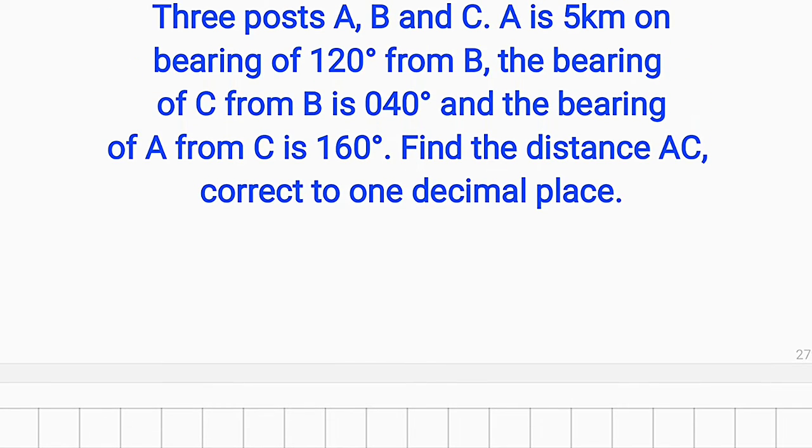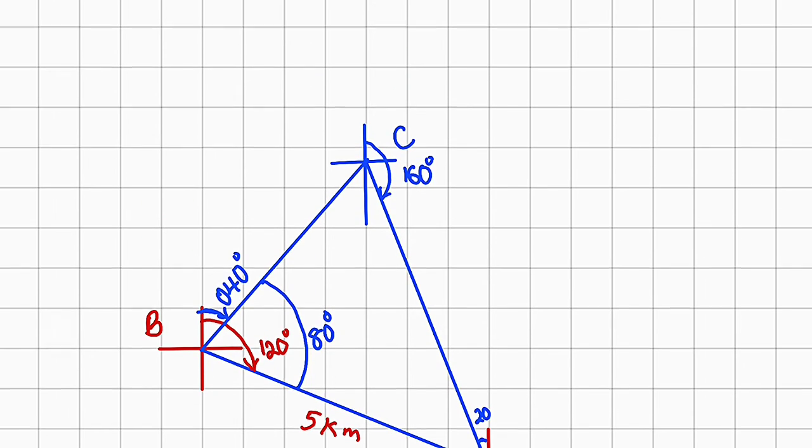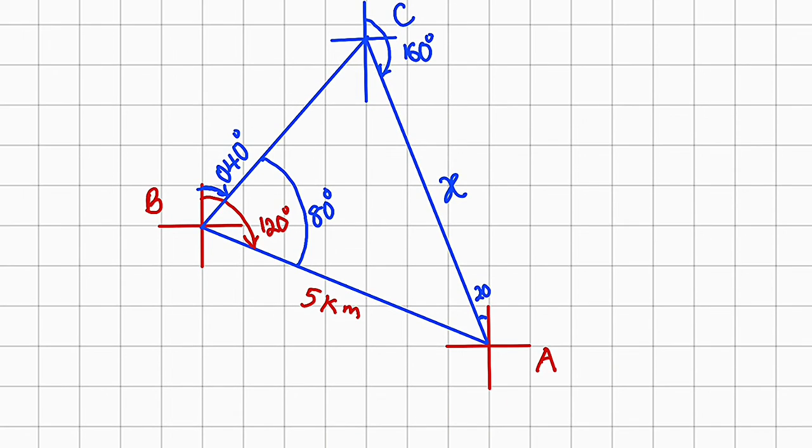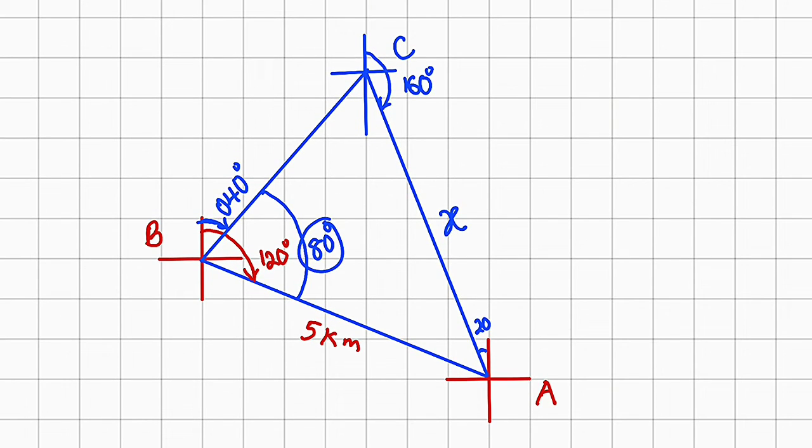We are almost done. Remember, we are asked to find the distance from A down to C, correct to one decimal place. So let us locate it: A to C, this is the point. So let me call it X. Let's fill some of these angles. We already see that this is 80 degrees, and we know that this angle, this particular angle, must be 40 degrees because it is alternate to this one. And this particular angle must be 20 degrees because it must be alternate to this one as well. So if you combine the two together, you have 60 degrees here. I think we can use sine rule in order to find the distance between A down to C.